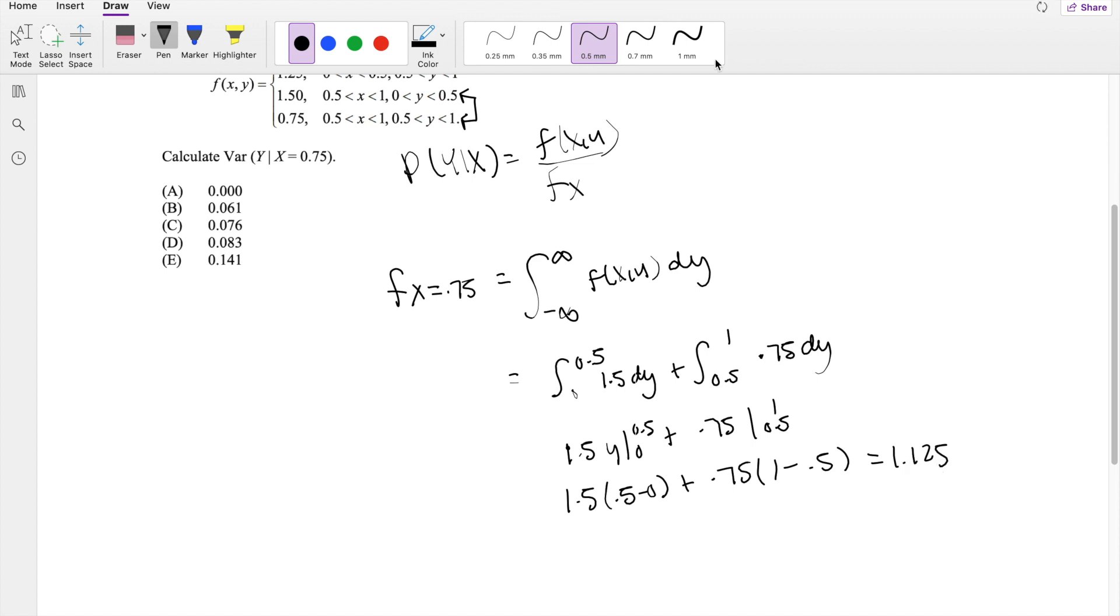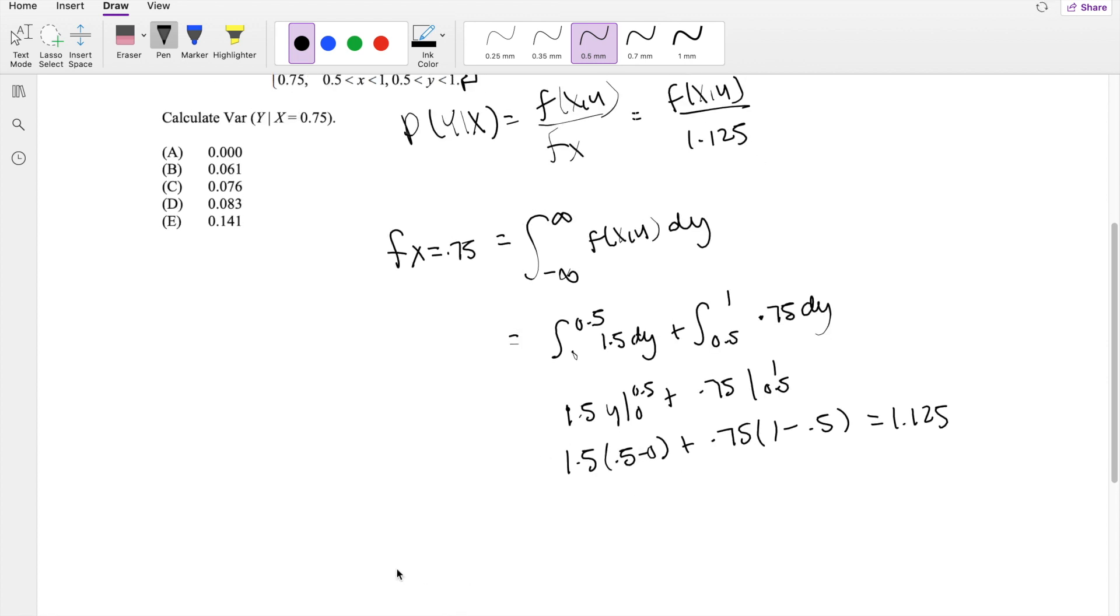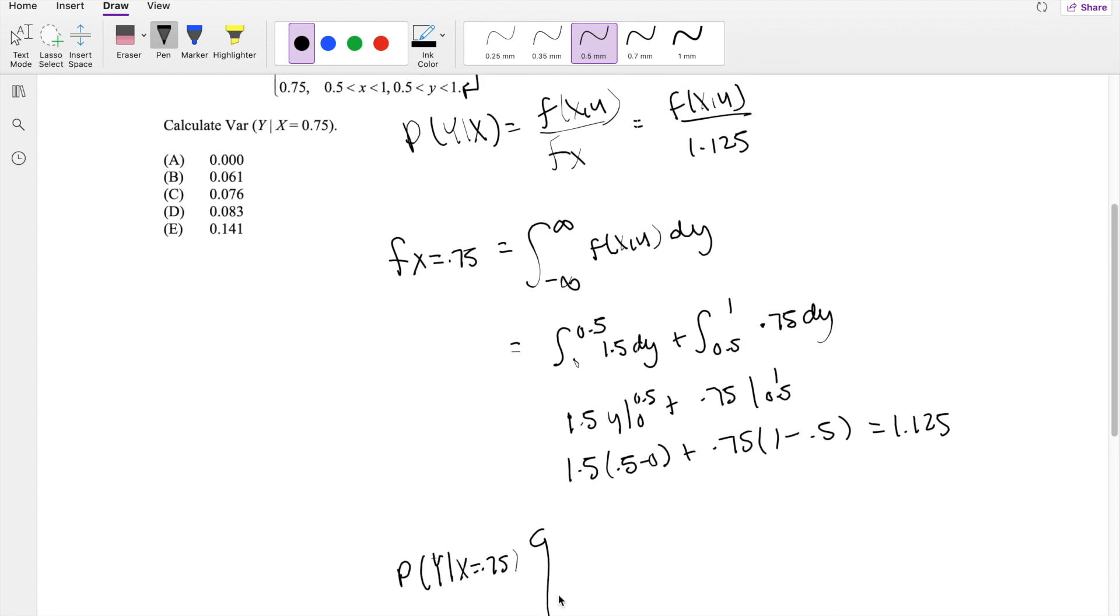Alright, so then this now becomes equal to f of xy divided by 1.125. So what are these probabilities of distribution really? Because again, when x is equal to 0.75, there's actually two scenarios that can happen, right? So probability of y, given x is equal to 0.75, could be actually split up into two integrals here, I mean two stuff.